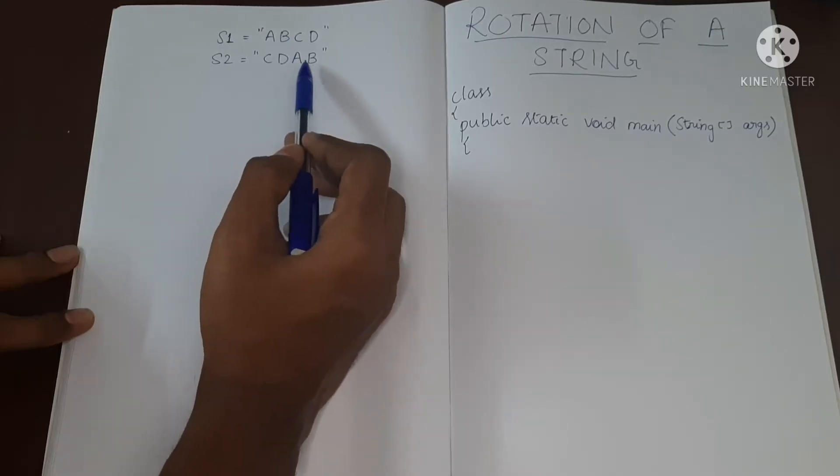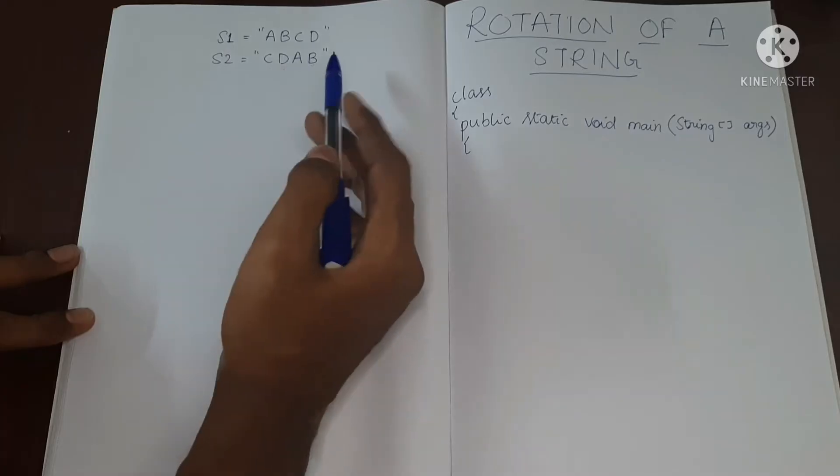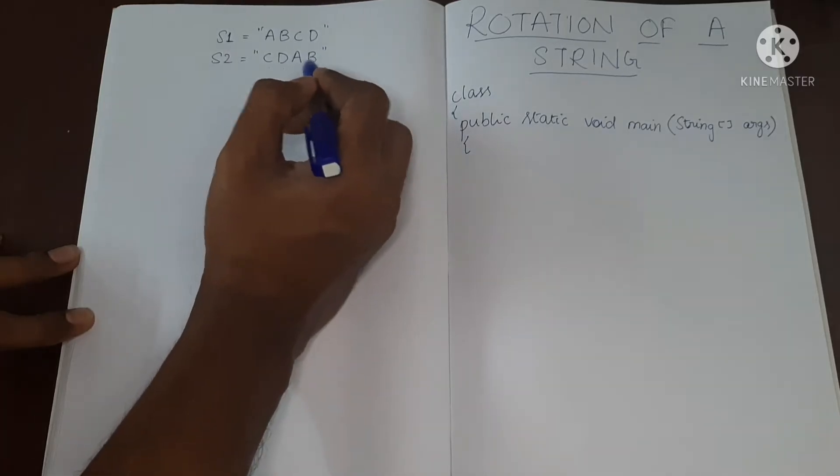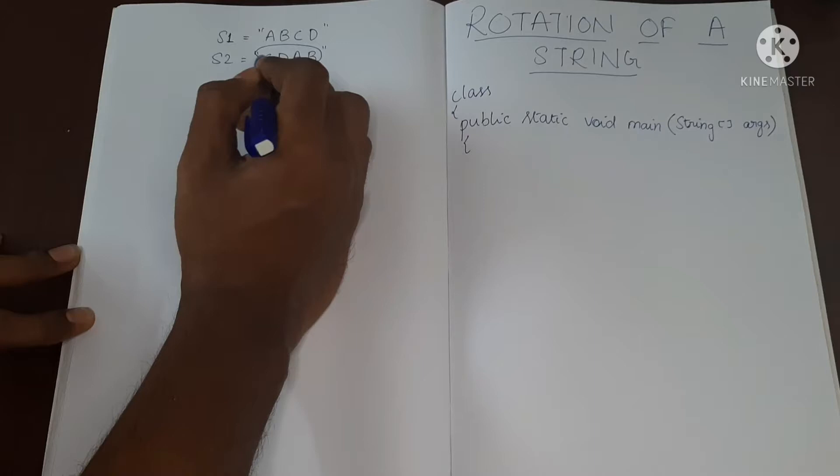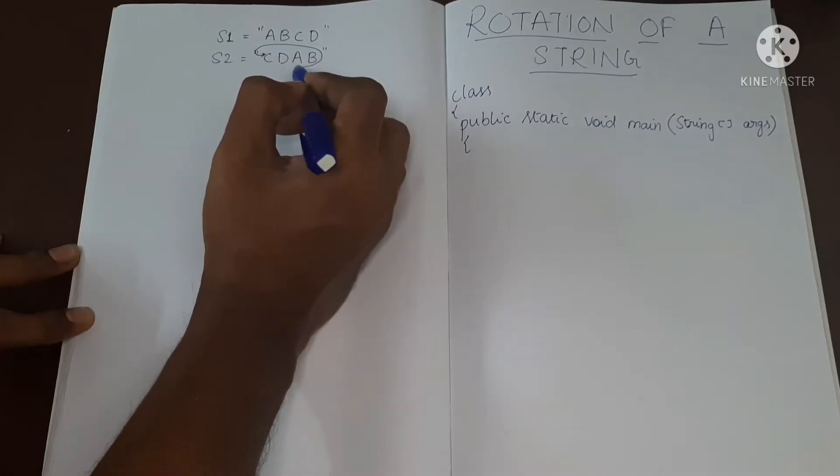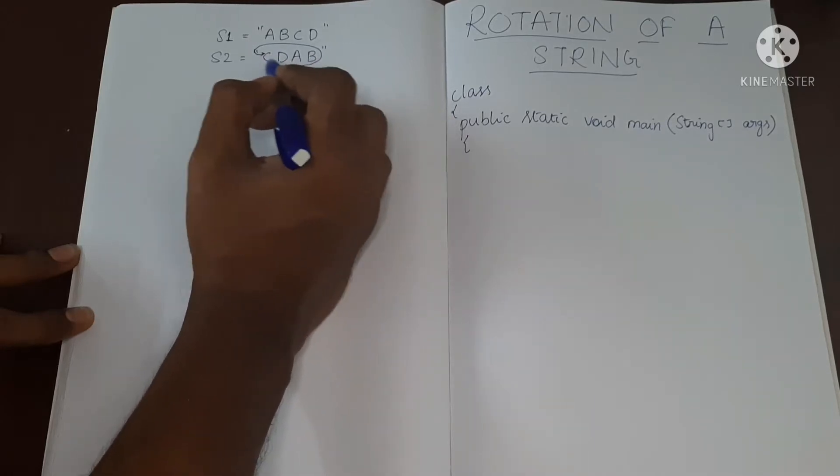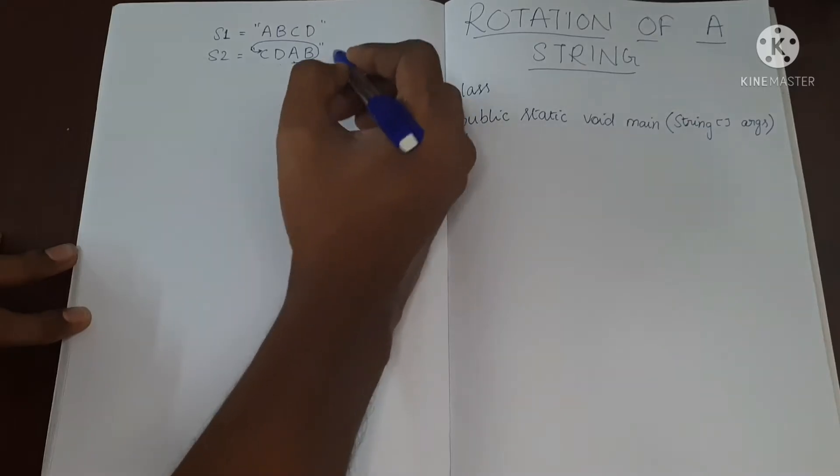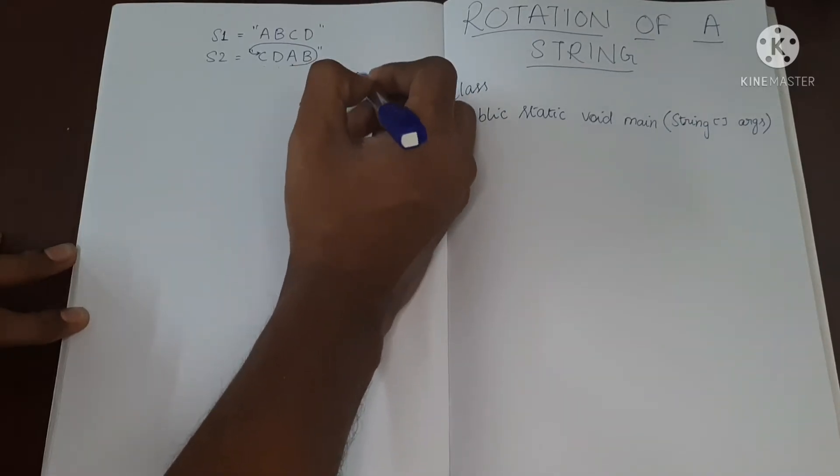So we have A, B, C, and D. If you see it this way, in this order, starting from here and then till here, or you can say C, D, A, B.